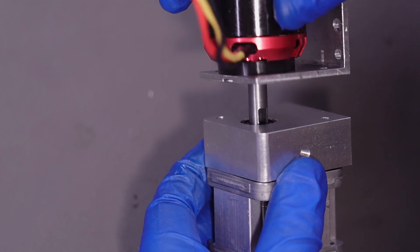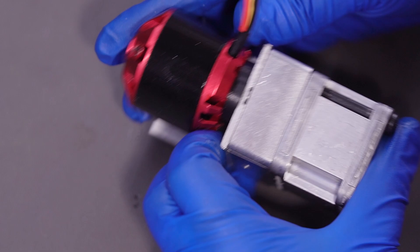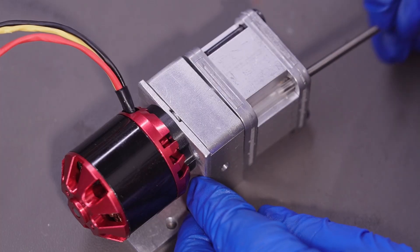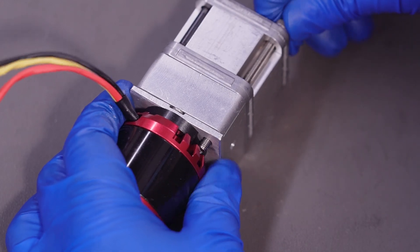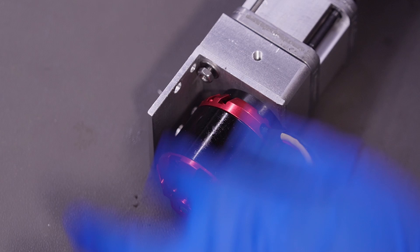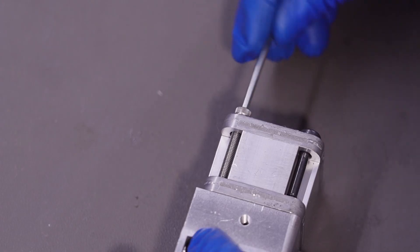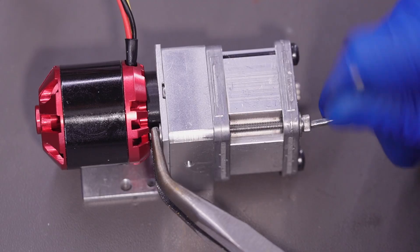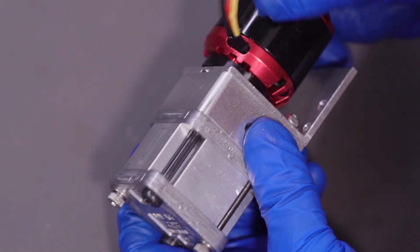Finally, I'll assemble the three parts and tighten them with screws. And with that, a miniature hydraulic pump for an RC model is complete.